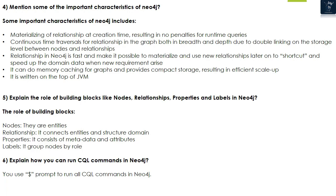Question 5: Explain the role of building blocks — nodes, relationships, properties, and labels in Neo4j. Nodes: they are entities. Relationships: they connect entities and structure the domain. Properties: they consist of metadata and attributes. Labels: they group nodes by role.